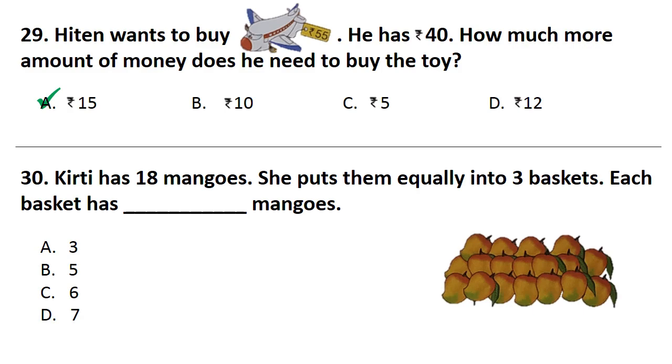Question No. 30. Kirti had 18 mangoes. She puts them equally into 3 baskets. Each basket has mangoes. Answer is Option C. That is 6.